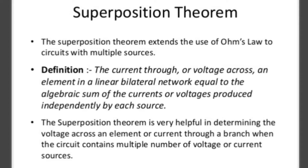Superposition theorem extends the use of Ohm's law in circuits with multiple sources — that means two or more voltage sources or two or more current sources. The current through any element or any branch can be calculated using superposition theorem. The definition: the current through any element in any linear network equals the algebraic sum of currents or voltages produced independently by each source.